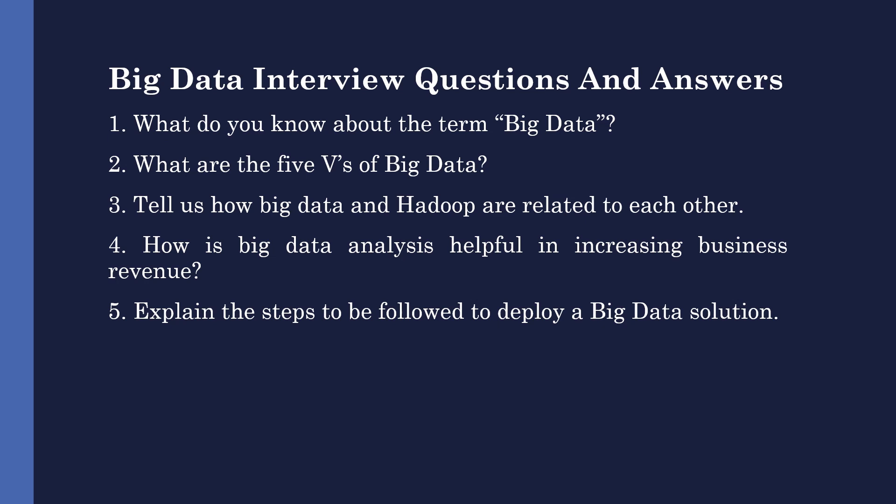The second question is: what are the 5 V's of big data? The 5 V's are volume, velocity, variety, veracity, and value. Volume refers to the amount of data growing at a high rate, which can increase up to petabytes. Velocity means the rate at which data is growing — social media contributes a major role in the velocity of growing data.